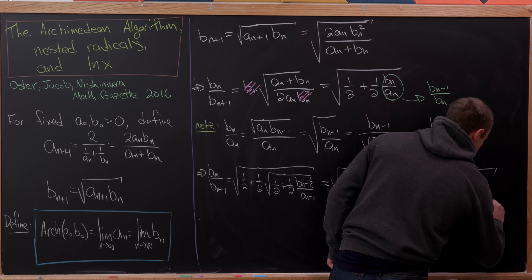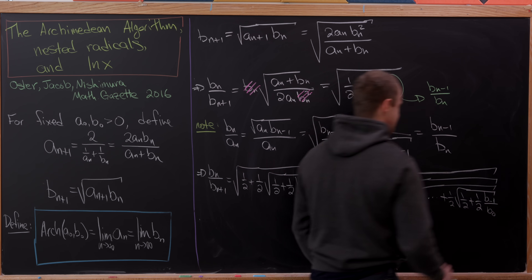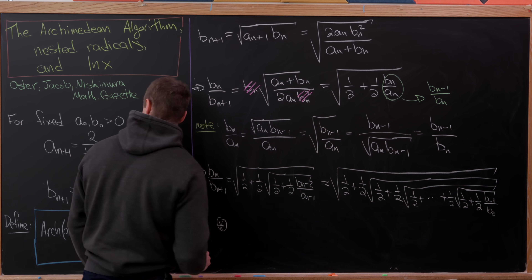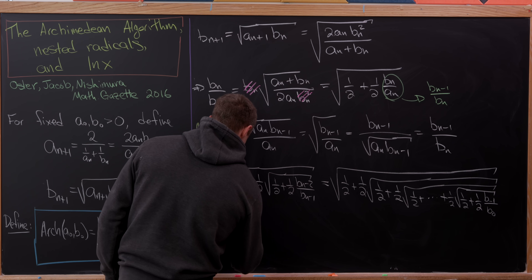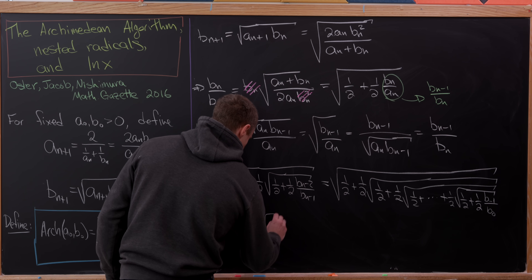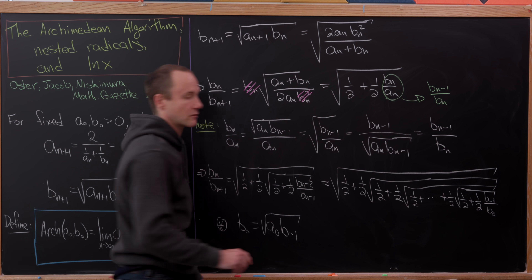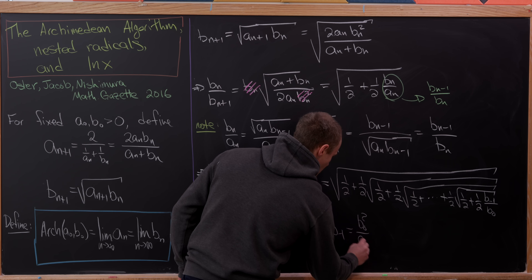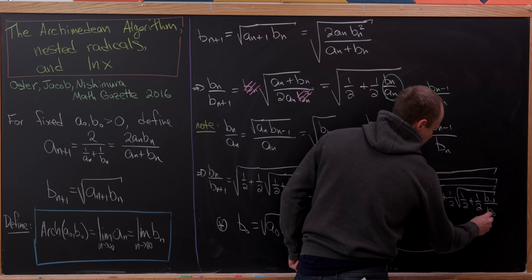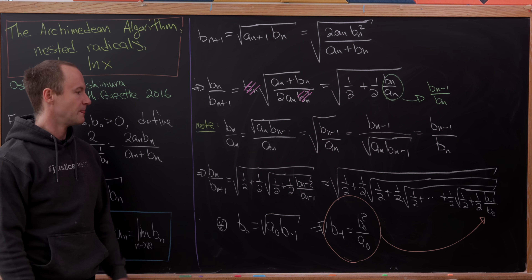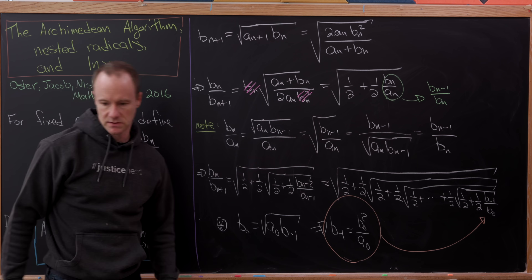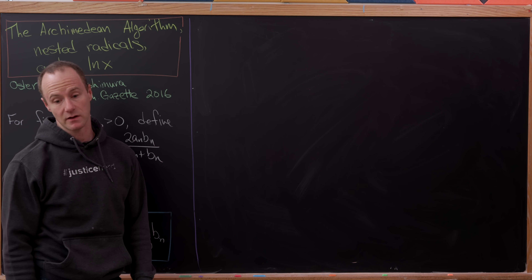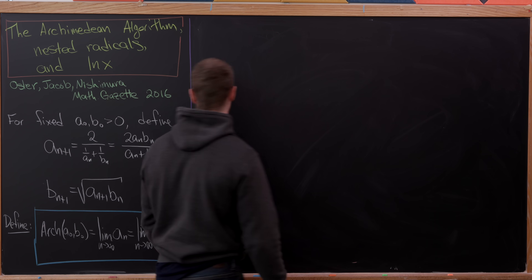We can define b_{-1} by reversing our recursion. Since b_0 = sqrt(a_0 · b_{-1}), solving gives b_{-1} = b_0² / a_0. So we've developed a method for writing the quotient of two consecutive b_n terms as a nested radical, and now we'd like to use that to find a nice expression for the Archimedean mean.